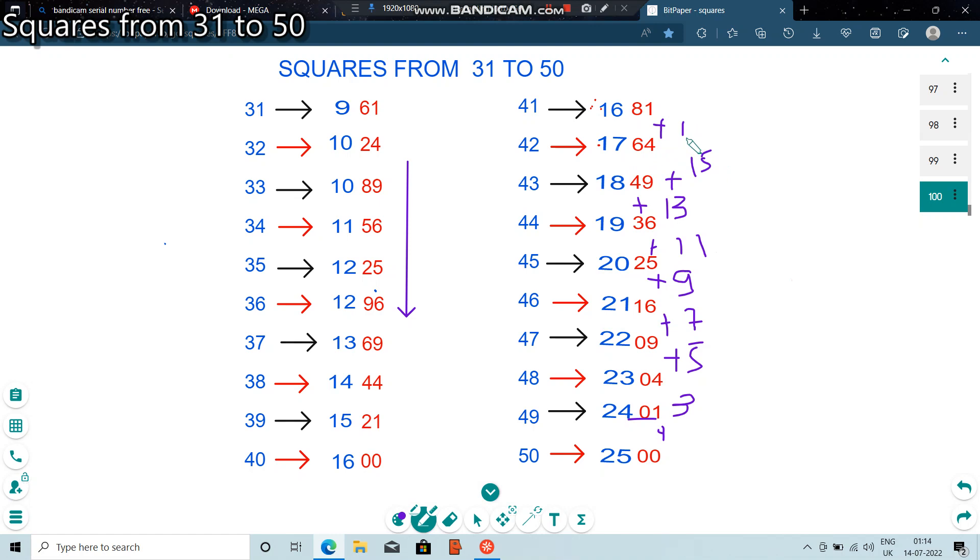Then, 17, we added to 64. We got 81. In this way, you can find the square of 41 until 50. Also, 31 to 40. Thank you.